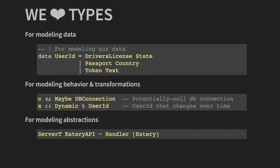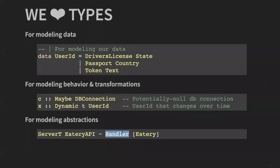Of course, a second-order thing we love about types is we can describe information about behavior or transformations of our data in types. Types like `Maybe a`, which encodes a database connection that might be null, or `Dynamic t UserId`, which — if you were at Doug Beardsley's talk — is a user ID that can be changing over time in an FRP way. On the front end you could pull that thing or push to it. We also have more exotic type-level modeling — for example, a `Server t` type family which can turn an Eatery API, some business domain type, into a type you can execute on a server or as a client.